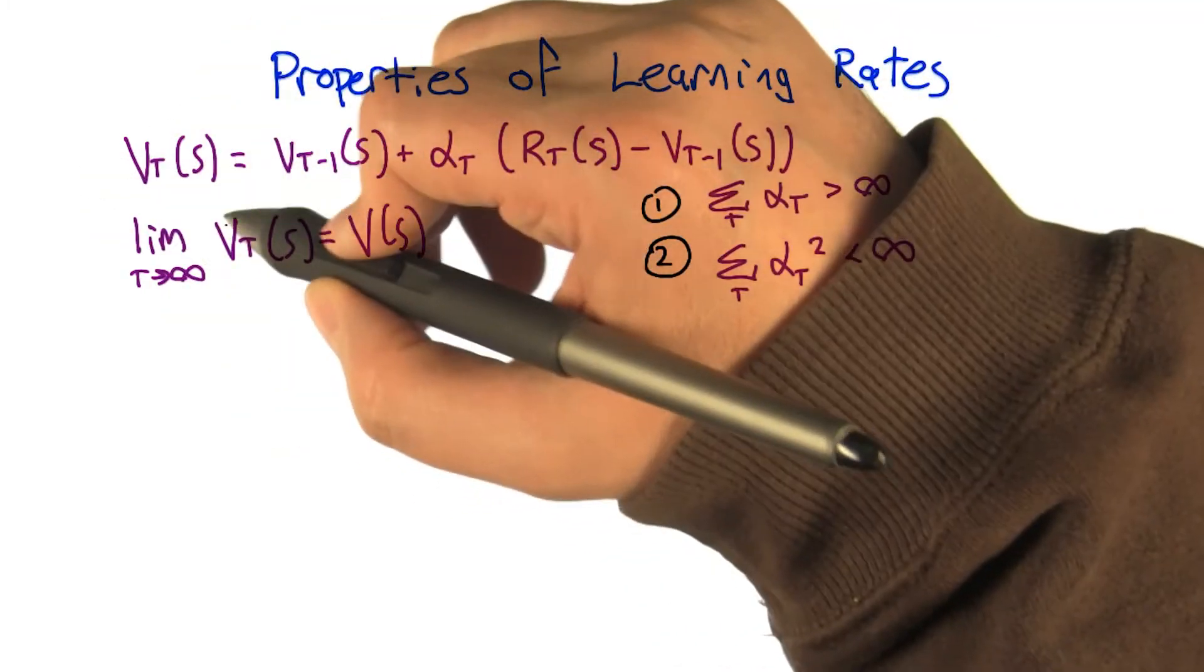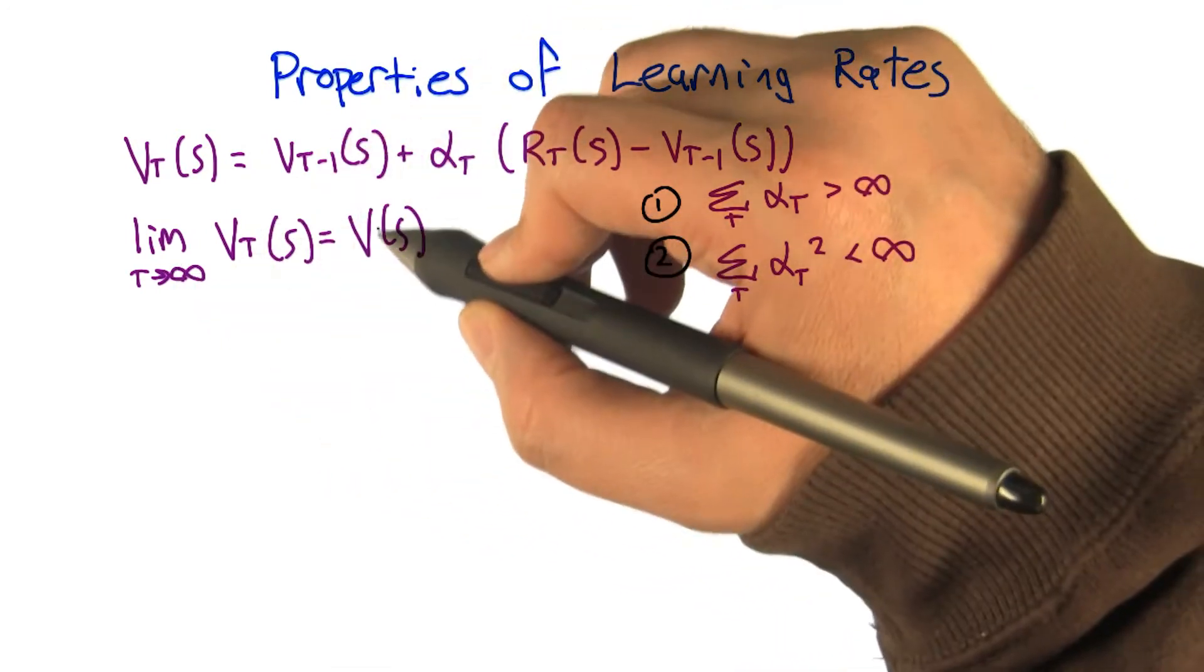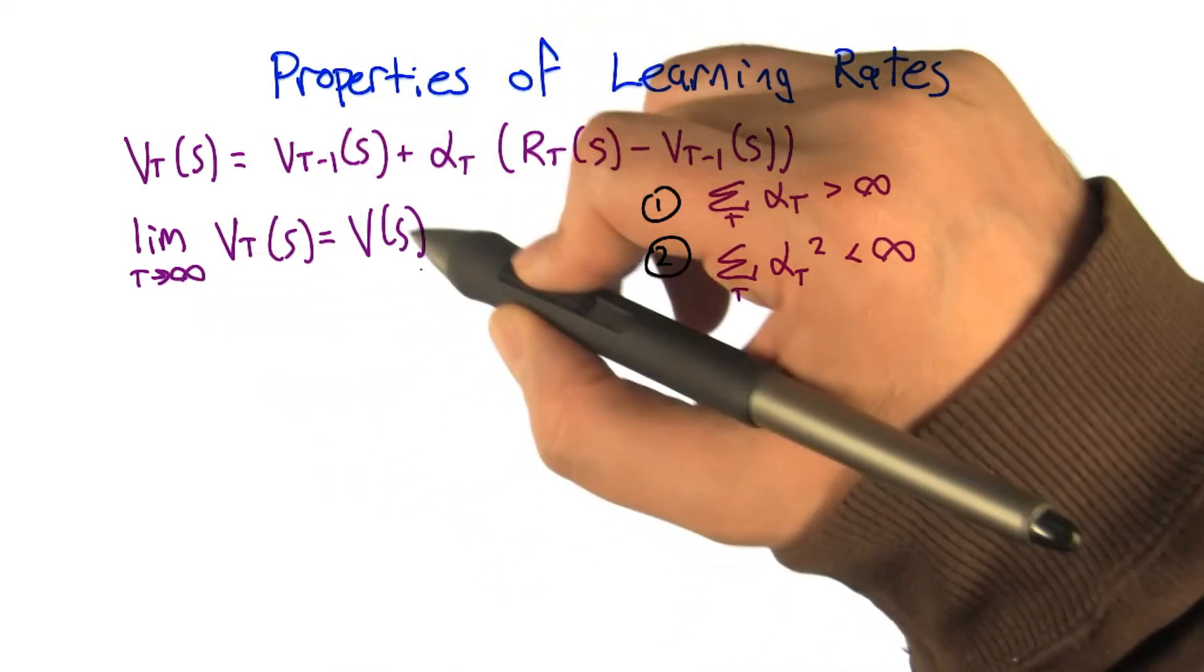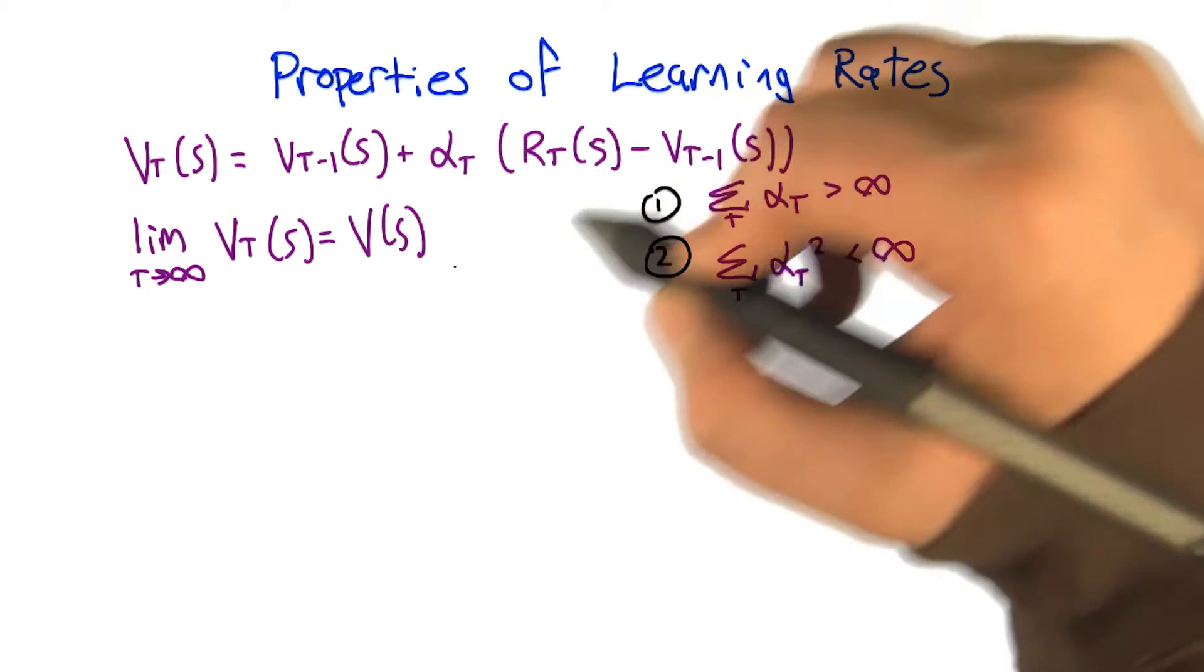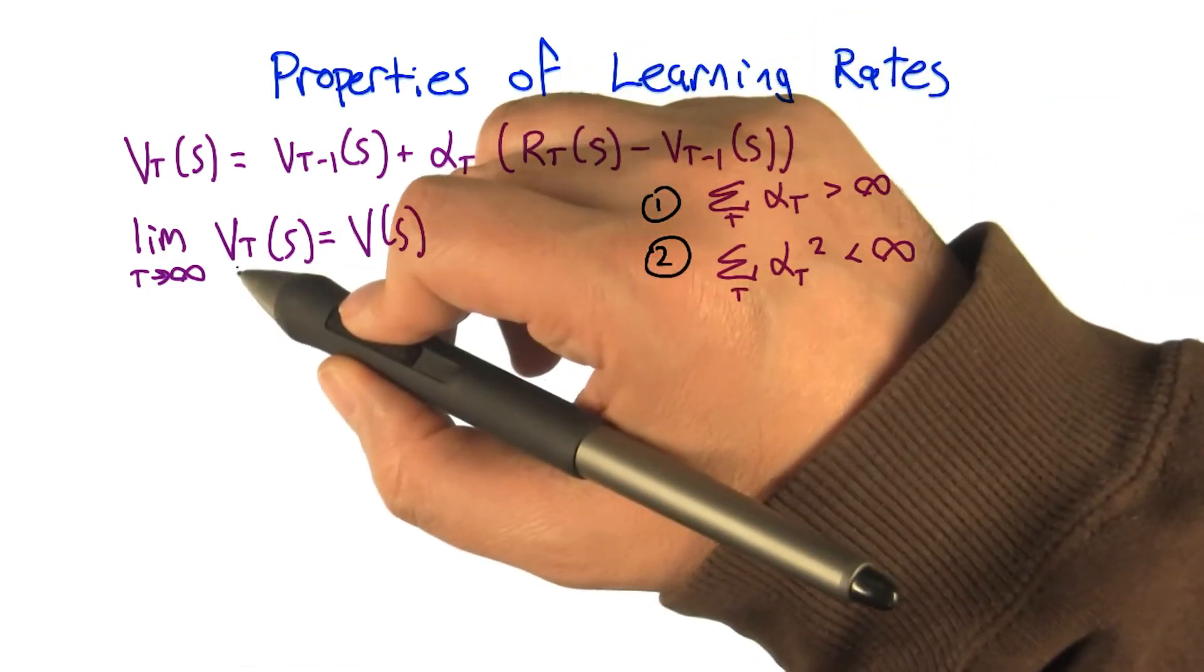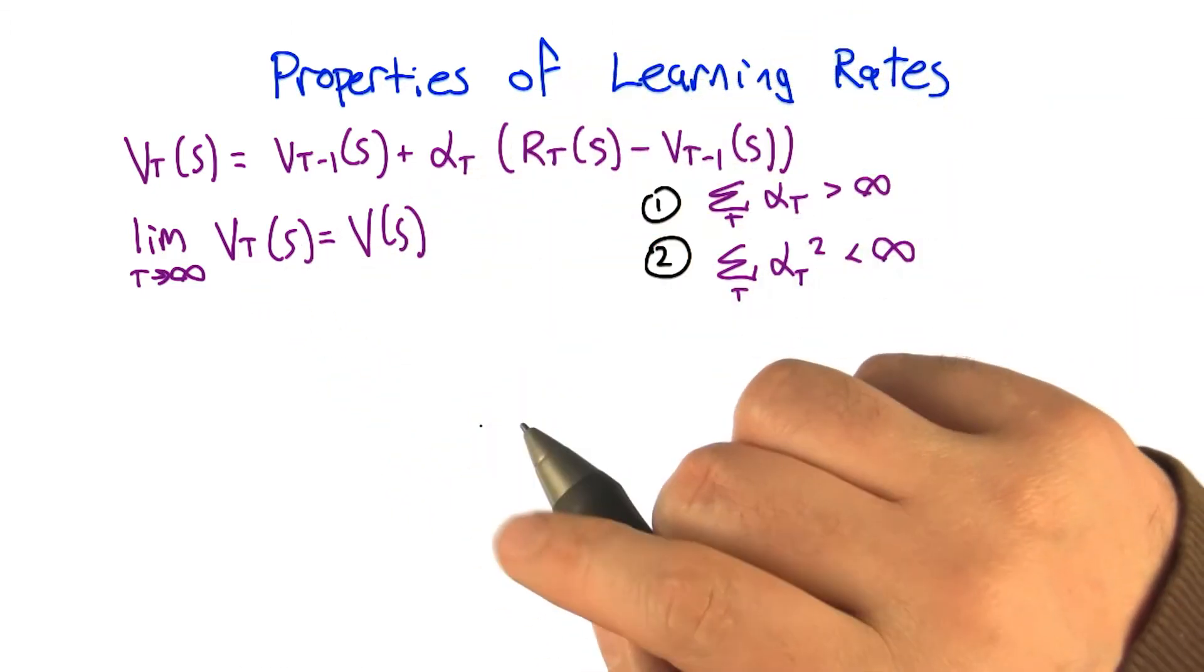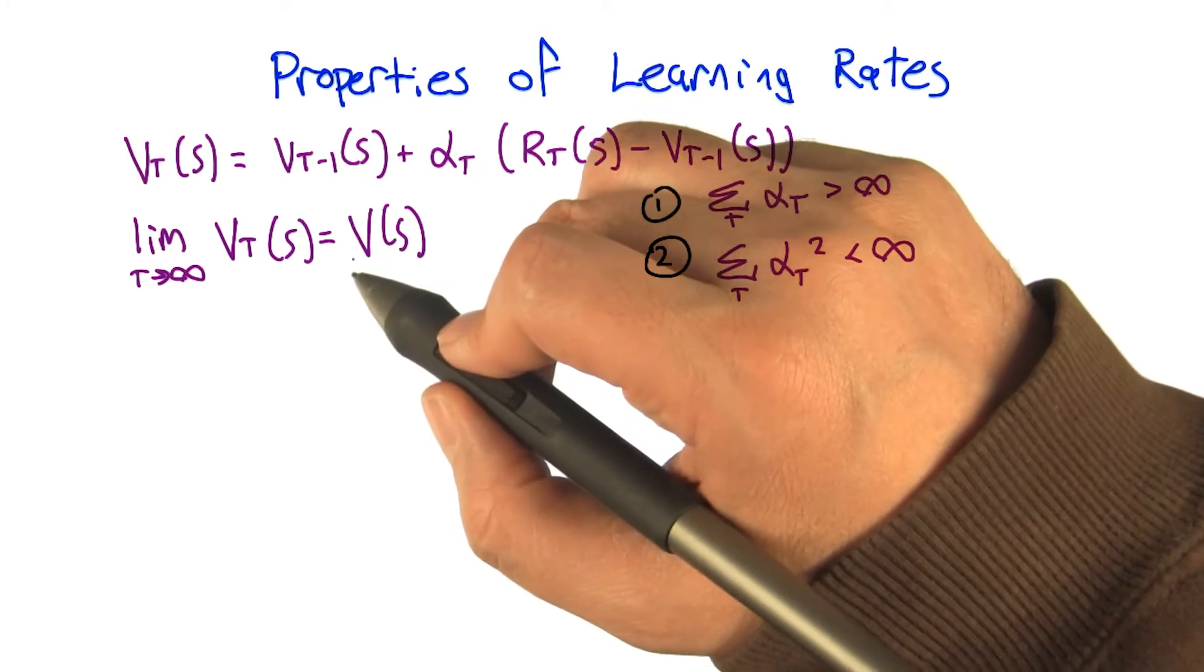Then this Vt will actually go to the true expectations, the actual average value of the r's once t is big enough. Okay? So that's good. That means it's actually learning the right thing.